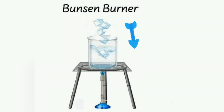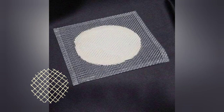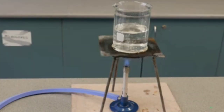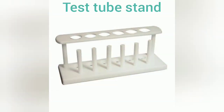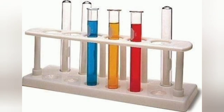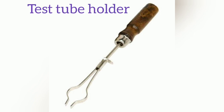A wire gauze is a net-like mesh of interconnected strands of wire. It may also have a white asbestos gauze in the center. It ensures a uniform distribution of heat — an object placed over a wire gauze receives more uniform heat from the burner. A test tube stand is a plastic or wooden stand used to place clean test tubes when they are not in use and also when liquid chemicals are kept in them.